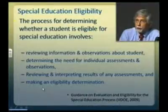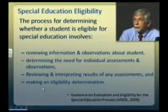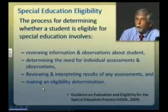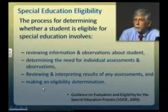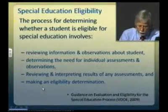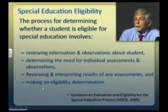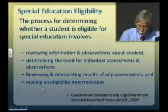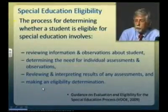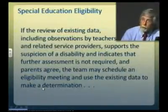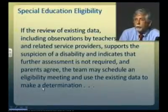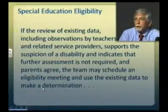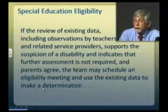Returning to the process of special education eligibility, the process drawing on Virginia Department of Education guidance requires that the eligibility team review information and observations about a student, determine the need for individual assessments, review and interpret results, and then make an eligibility determination. Importantly, if the review of existing data supports the suspicion of disability and indicates there is no further need for assessment, the team can proceed with the eligibility process without additional assessment.